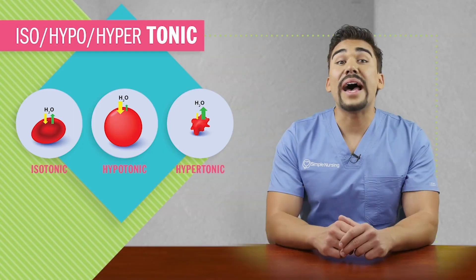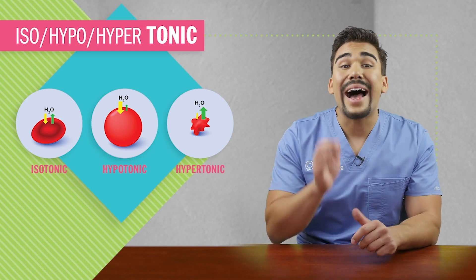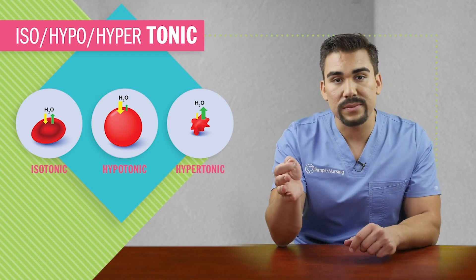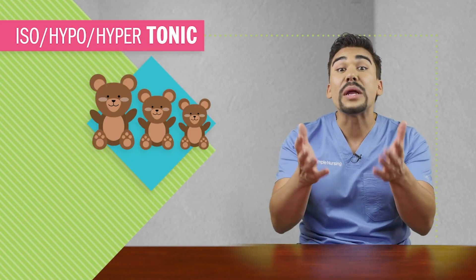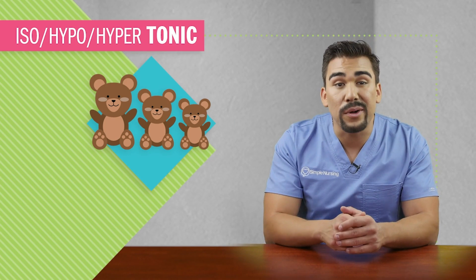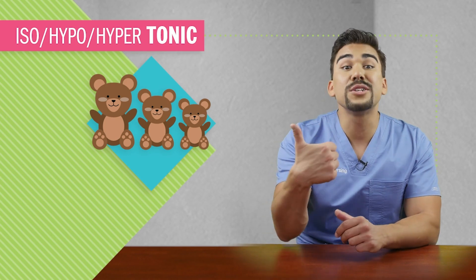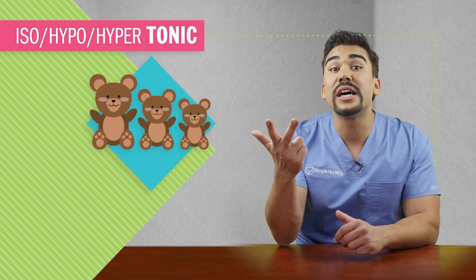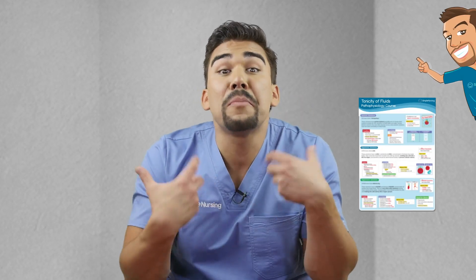Today we're talking about isotonic, hypotonic, and hypertonic solutions. They're kind of like the three little bears or the three little hippos — one is too much, one is too little, and one is just right. So let's break down these IV fluids using our super cute hippopotamus method.